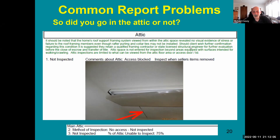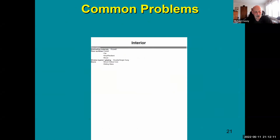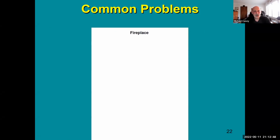On the opposite extreme, here's a report where the entire interior page lists only: ceiling materials — drywall, floor surfaces — floor coverings, windows — double single-hung, doors — wood hollow core. That's it. This doesn't meet the standard of care. Even worse, the fireplace page is completely blank — at minimum write 'none present.' A blank page is just weird.